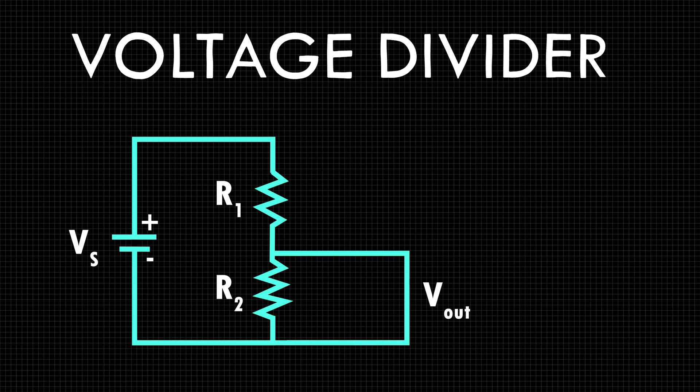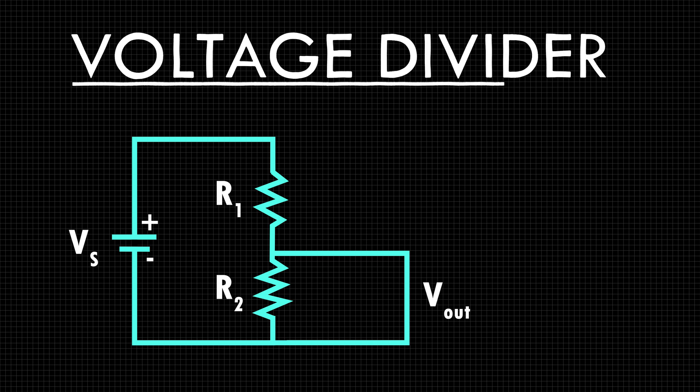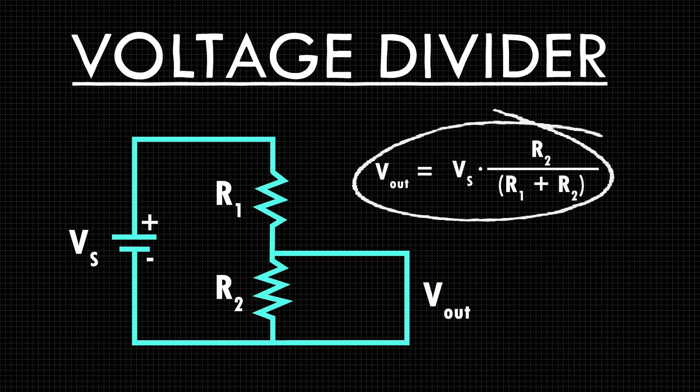So what matters is the value and where you actually place it. For example, one of the classic electric circuits is the voltage divider, in which we can use just two resistors in series in order to control the output voltage.